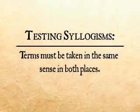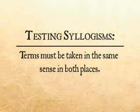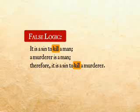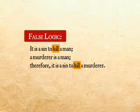Testing syllogisms: since the terms in every syllogism are usually repeated twice, we must examine that they are taken precisely in the same sense in both places. The greatest part of mistakes that arise in forming syllogisms usually comes from some little difference in the sense of one of the terms in the two parts of the syllogism. Example of false logic: it is a sin to kill a man; a murderer is a man; therefore, it is a sin to kill a murderer. When we examine this syllogism we find that the word 'kill' in the first proposition signifies to kill unjustly or without law, but in the conclusion it is used in an absolute sense for putting a man to death in general, and therefore the conclusion is not good because the terms mean different things.